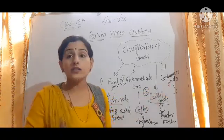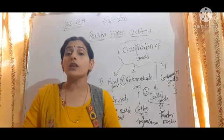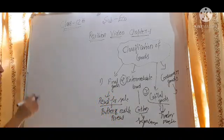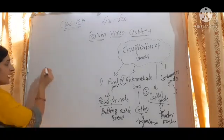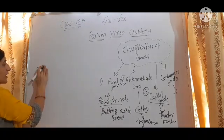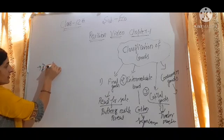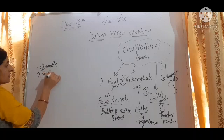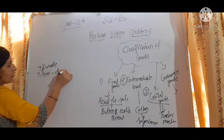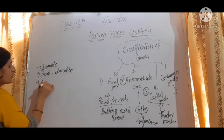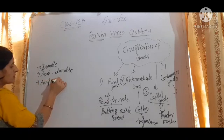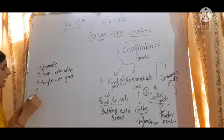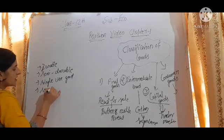Then we have consumer goods. Consumer goods are those goods which are directly consumed by the consumer. The classification of consumer goods includes: first, durable goods; second, semi-durable goods; third, single use goods; and fourth, services.